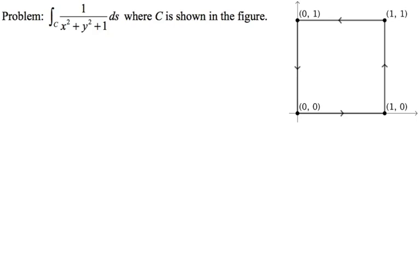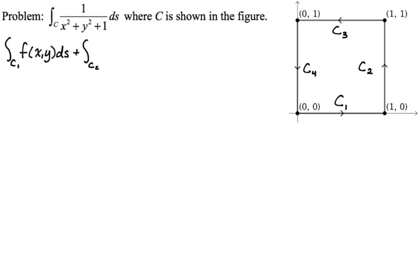First I'm going to label those: c1, c2, c3, c4. What we want to do is find all four of those line integrals and then just add them up. So we'll integrate over c1, then c2, then c3, and then over c4 — ds in each case.